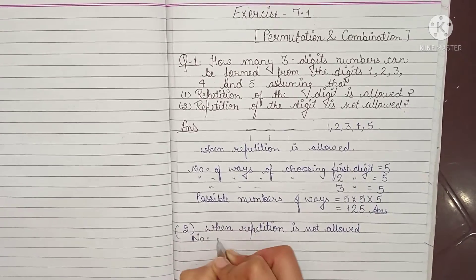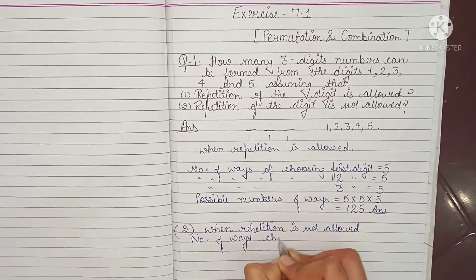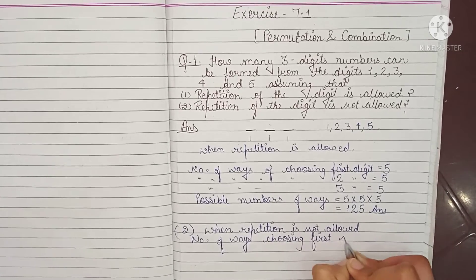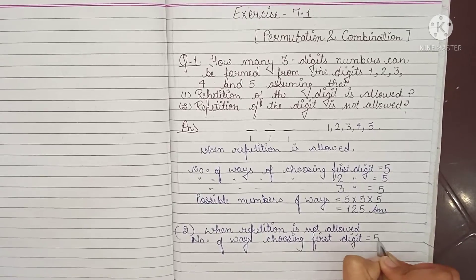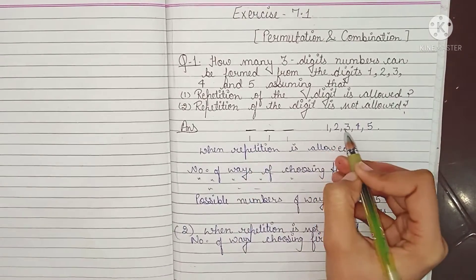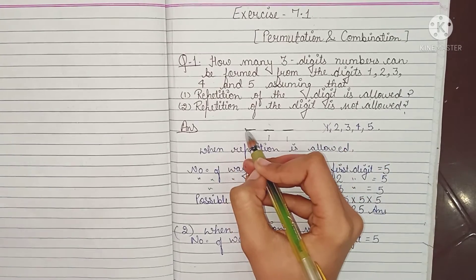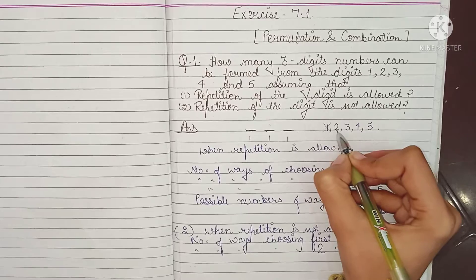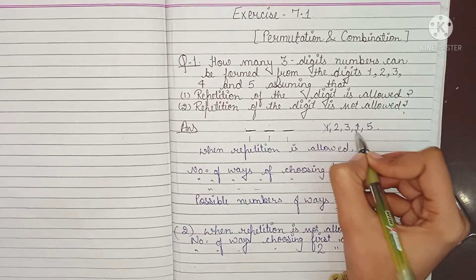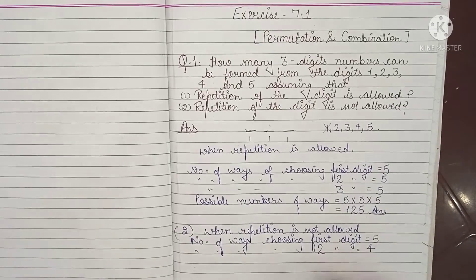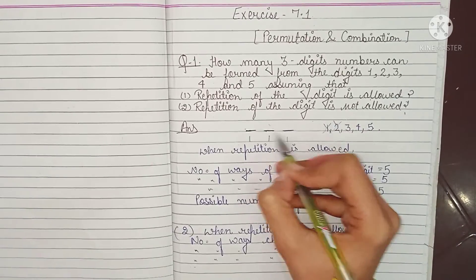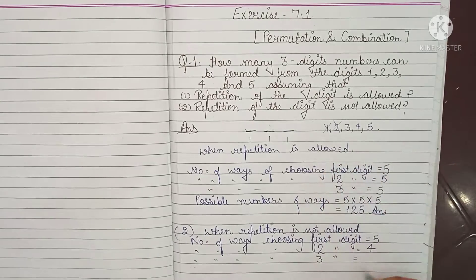Number of ways of choosing the first digit is 5. First digit ke liye number of ways 1, 2, 3, 4, 5 hi rahenge. But if we have chosen 1 as the first digit, then number of ways for choosing the second digit — 1 will be cancelled, so total number of ways left is 4. And for choosing the third digit, total number of ways left is 3.